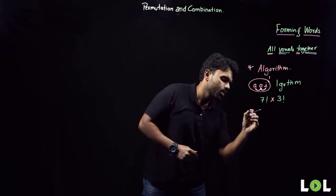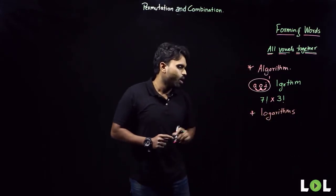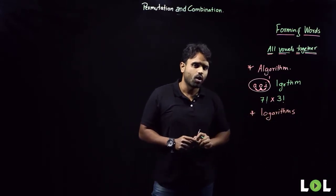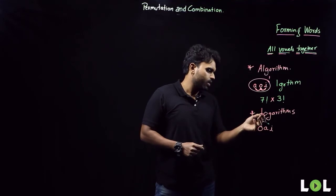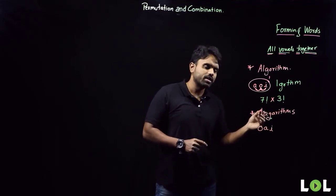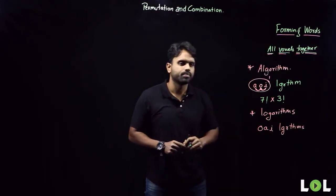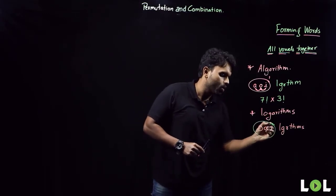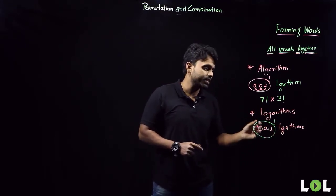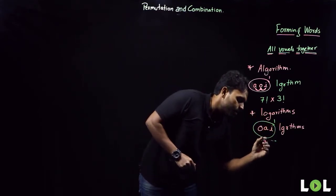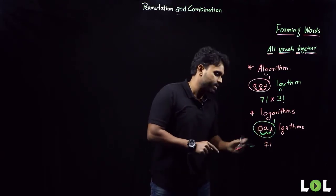Next example: LOGARITHMS. In how many different ways can the word LOGARITHMS be arranged such that all vowels are always together? The vowels are O, A, I. The consonants are L, G, R, T, H, M, S — seven consonants. Treating the vowels as a single unit gives seven consonants plus one unit, so seven items arranged in seven factorial ways, and the three vowels rearranging among themselves in three factorial ways.